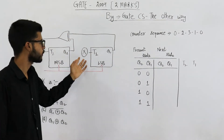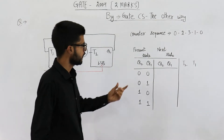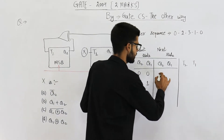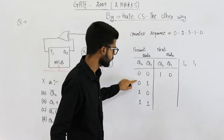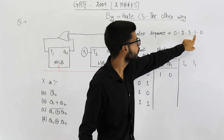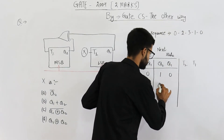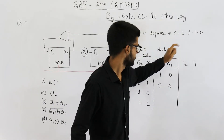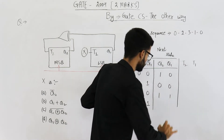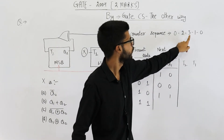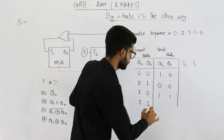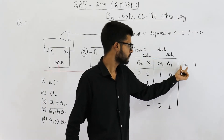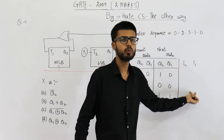From state 0 we want to go to state 2, so the next state is 2 which is binary 1 0. From state 1 we want to go to state 0, so that is 0 0. From state 2 we want to go to state 3, that means 1 1. From state 3 we want to go to state 1, so it is 0 1. Now let's determine the values of inputs T2 and T1 such that this sequence is followed.